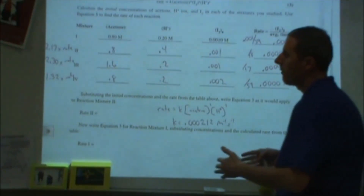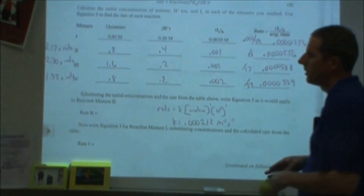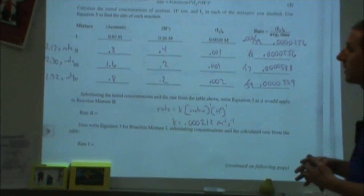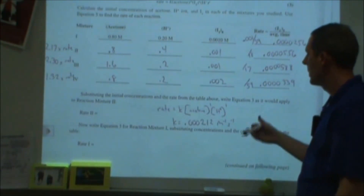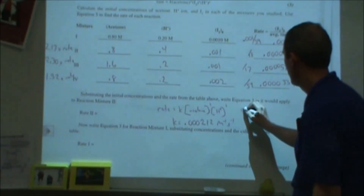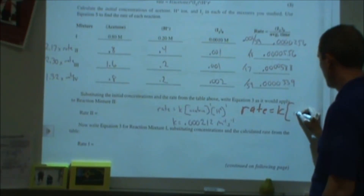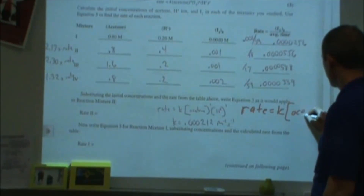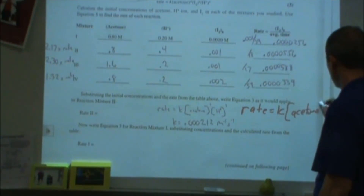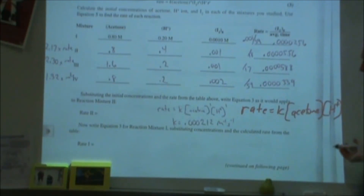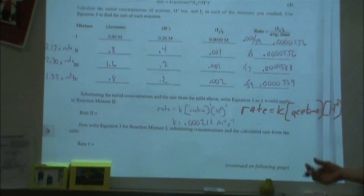If the factor were above 1.5 we might revisit the data, but here the closest answer is zero order for iodine. So the rate law is: rate = k[acetone]¹[H⁺]¹[I₂]⁰. Since iodine is raised to the zero power, it drops out of the rate law entirely.